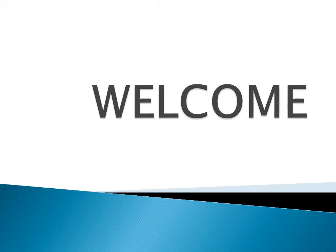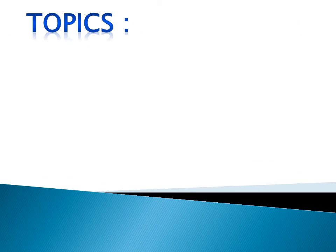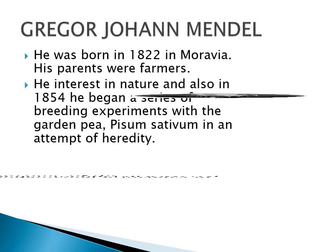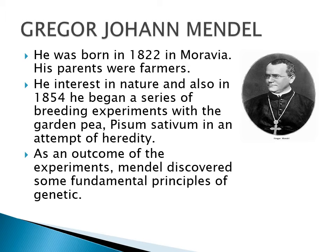Welcome back. Our topic is Mendel and his experiments — monohybrid and dihybrid. Gregor Johann Mendel was a scientist who began a series of breeding experiments with garden pea plant, that is Pisum sativum, in an attempt to understand heredity. As an outcome of his experiments, he discovered the fundamental principles of genetics.